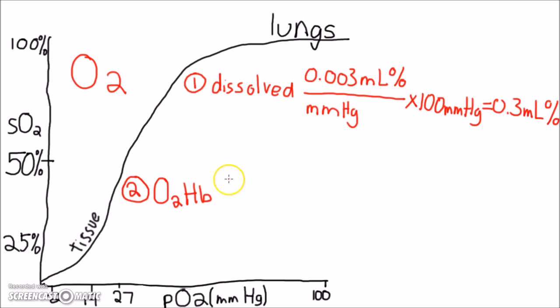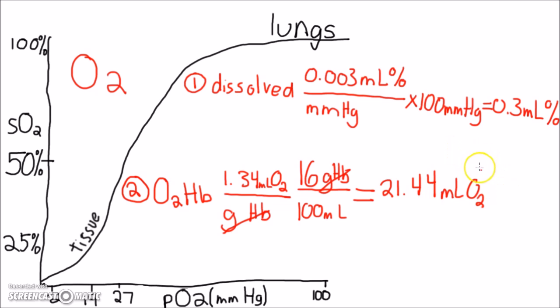However, each hemoglobin can bind four molecules of oxygen. The average man has 16 grams of the hemoglobin protein in a deciliter of blood, and the average woman has 14 grams. Each gram of hemoglobin can bind 1.34 mL of oxygen, and so 16 grams per deciliter times 1.34 mL oxygen per gram equals 21.44 mL of O2 per deciliter. Combined, this equals about 22 mL of oxygen per deciliter, a 22% solution.